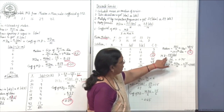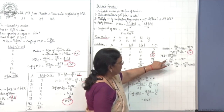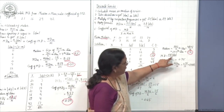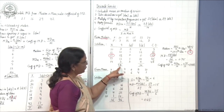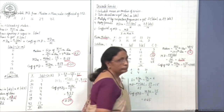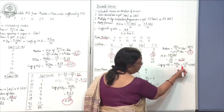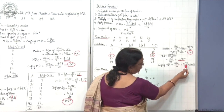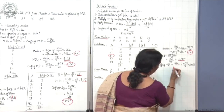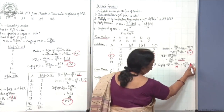Apply the formula: MD(M) = σf|dm| / n = 36/48 = 0.75. Coefficient of mean deviation = MD(M) / M = 0.75 / 12 = 0.0625. This means the value of mean deviation is 0.06 away from the actual average.